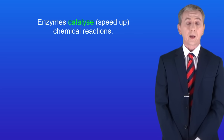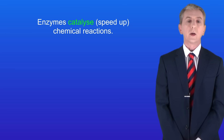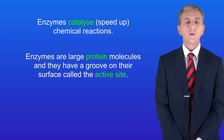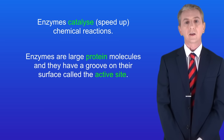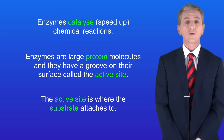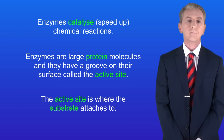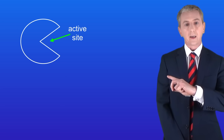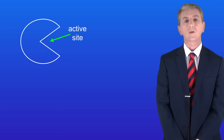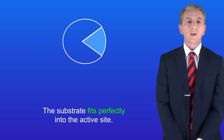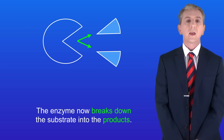Enzymes catalyse chemical reactions — in other words they speed them up. Enzymes are large protein molecules and they've got a groove on their surface called the active site. The active site is where the substrate attaches, and the substrate is the molecule that the enzyme breaks down. Here's an enzyme with the active site on the surface, and the substrate molecule fits perfectly into the active site. The enzyme then breaks down the substrate into the products.